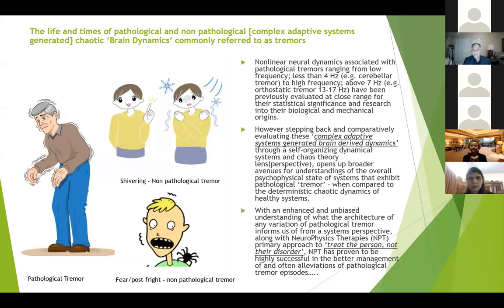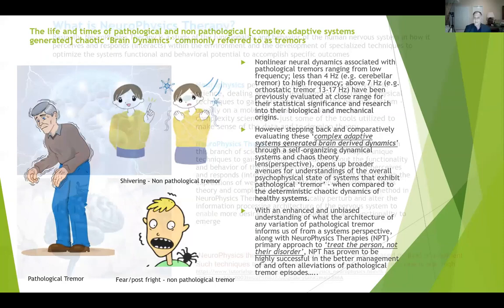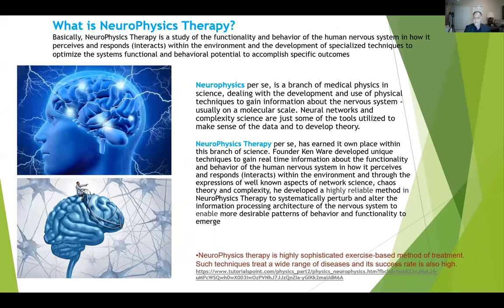What is neurophysics therapy? Neurophysics per se is a branch of medical physics dealing with the development and use of physical techniques to gain information about the nervous system, usually on a molecular scale with PET scans, functional MRIs and the likes. Neural networks and complexity science are just some of the tools utilised to make sense of the data and to develop theory. Neurophysics therapy has earned the same place within this branch of science. I developed unique techniques to gain real-time information about the functionality and behaviour of the human nervous system in how it perceives and responds — basically how it interacts within the environment — and through expressions of network science, chaos theory, and complexity, developed a highly reliable method to systematically perturb and alter the information processing architecture of the nervous system to enable more desirable patterns of behaviour and functionality to emerge.